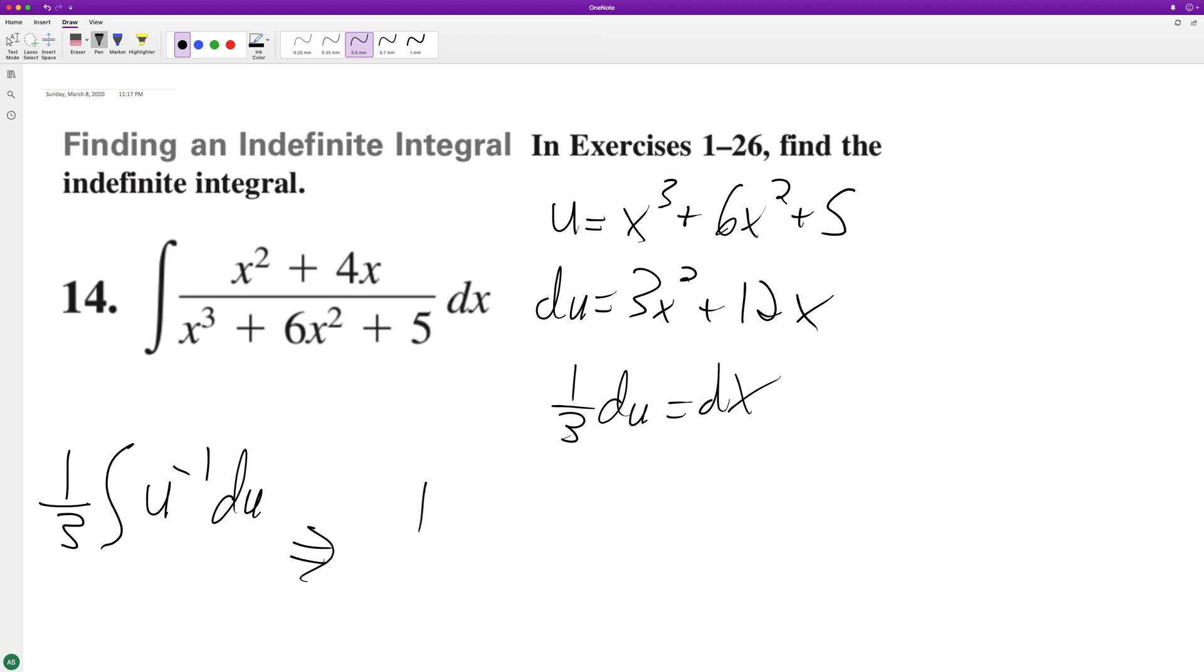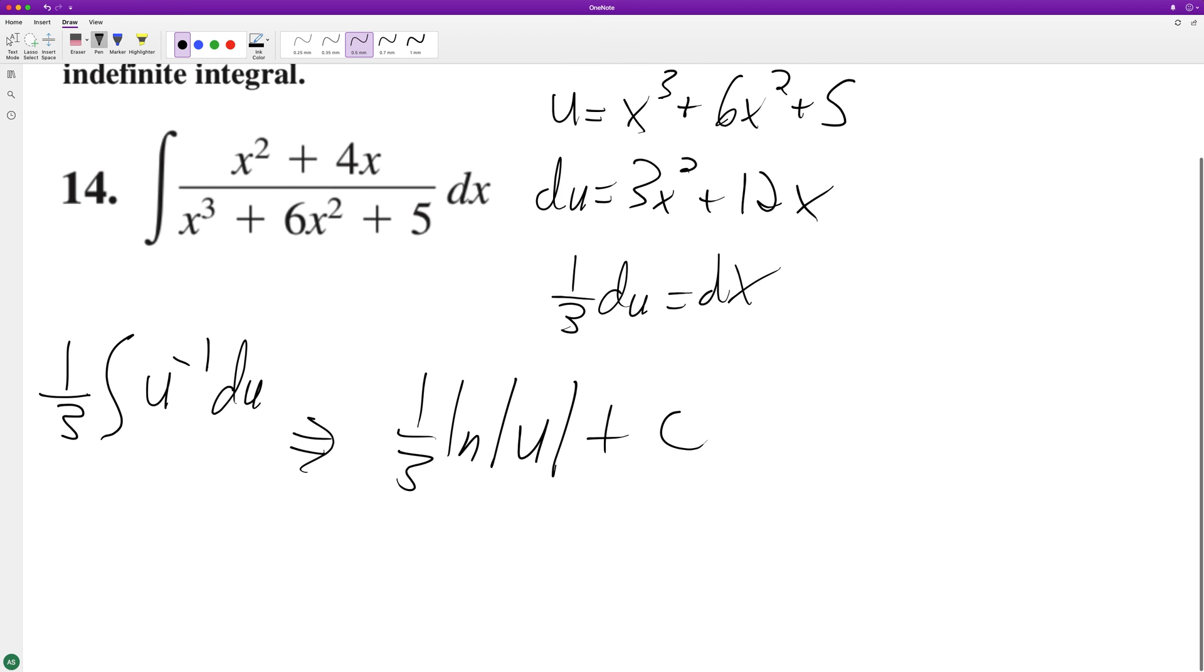When we integrate this, we get one-third times the natural log of absolute value of u plus c. Substituting back in for u, that's one-third times the natural log of x cubed plus 6x squared plus 5.